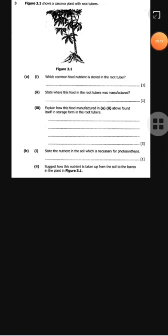State the nutrient in the soil which is necessary for photosynthesis. That's water. Don't make a mistake of mentioning magnesium. Water is a common nutrient that is found in the soil. Magnesium is not found in the soil; it's found in the leaves.